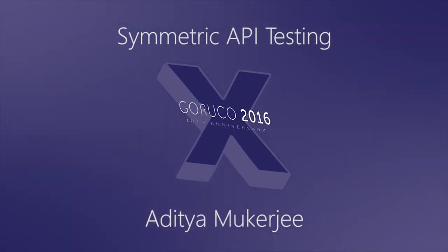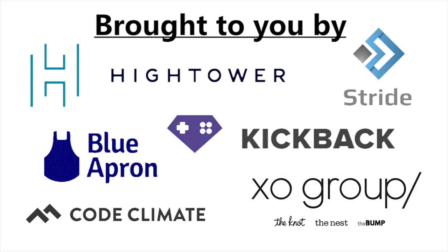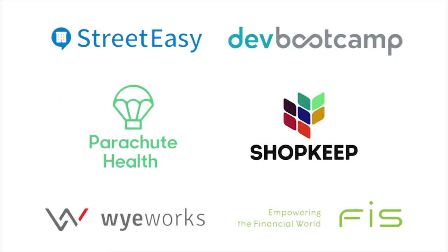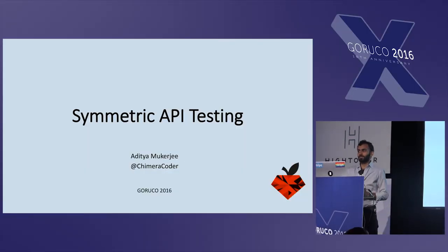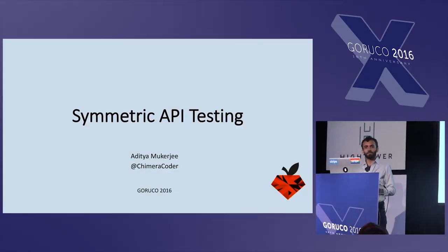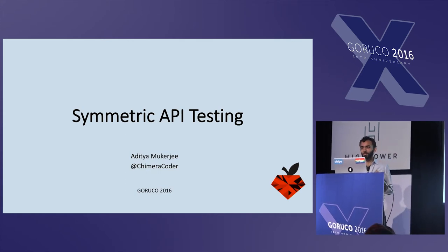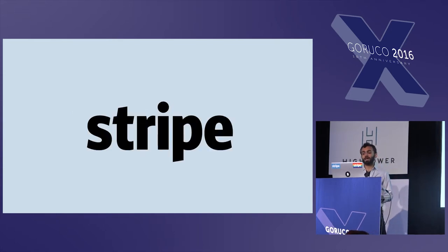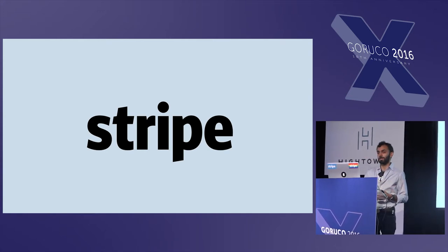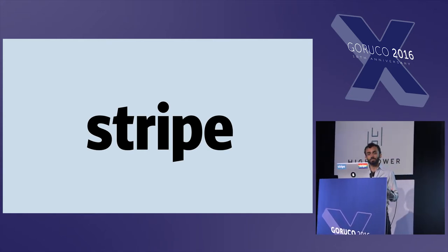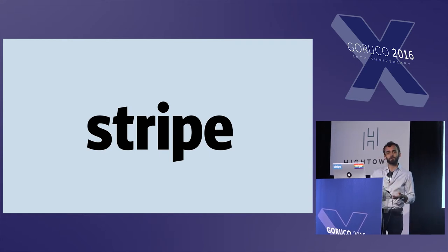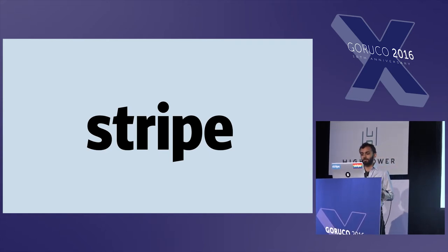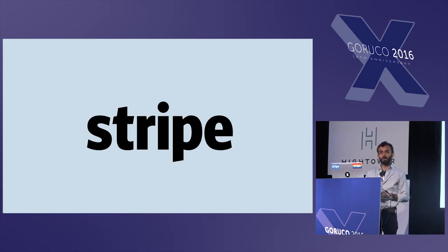Good morning, everyone. It's great to see so many people here, especially so early on a Saturday morning. My name's Aditya, and I am a risk engineer at Stripe. Stripe is the payments backbone for many companies, including a number of our sponsors here today — companies like Lyft, Kickstarter, Slack, NPR, Unicef, and many more. I'm on the risk team. I spend my days defending our users and customers, people like you, from online fraud.